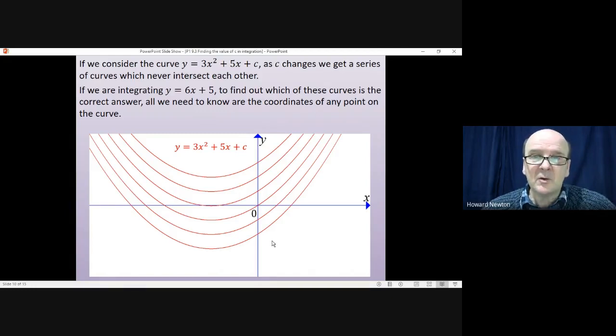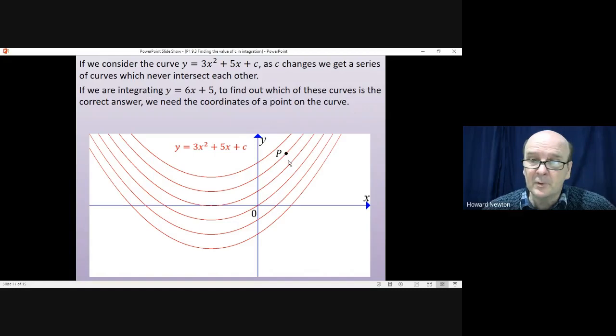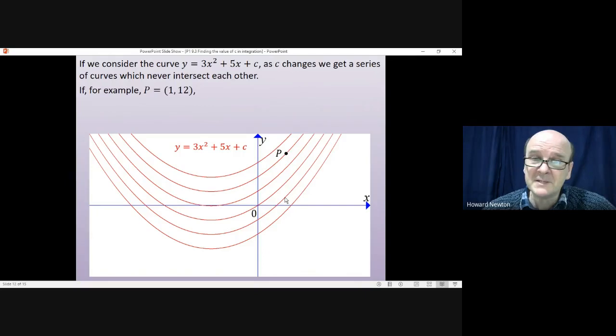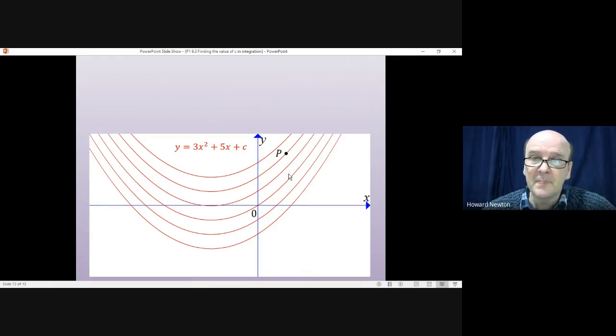Now if we're integrating y = 6x + 5 to find out which one of these curves is the correct answer, all we need to know are the coordinates of any point on the curve. So for example there might be a point here, point p, and if we know the coordinates of p then we can work out which of these curves is the correct one.